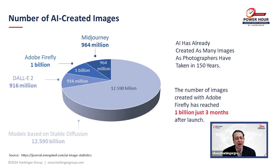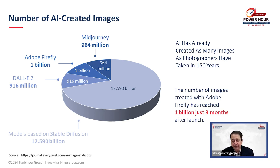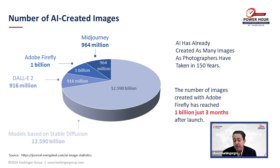Just how rapidly is AI spreading in the world of design? More than 15 billion images were created using text-to-image algorithms in 2023 alone. To put this in perspective, it took photographers 150 years — from the first photograph taken in 1826 until 1975 — to reach 15 billion images. From Stable Diffusion, a free-to-use deep learning text-to-image model by OpenAI, through DALL-E 2, Adobe Firefly, and MidJourney — you have a variety of tools to create images from text. This is really taking off.